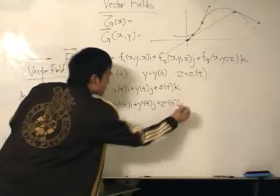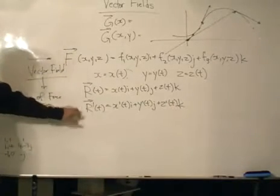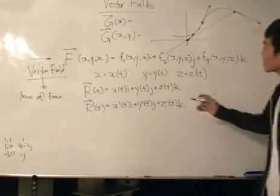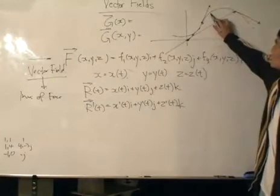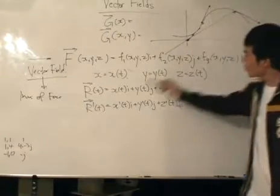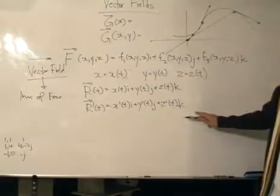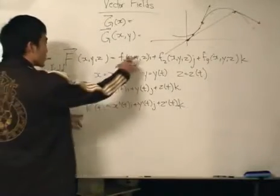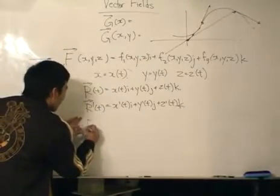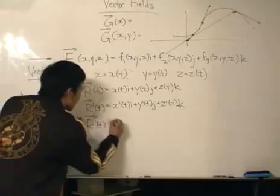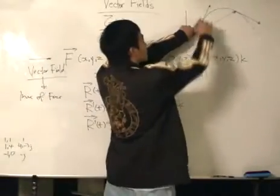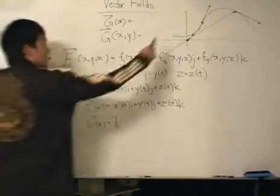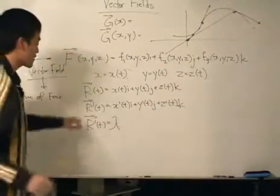How do we relate the vector field to the first derivative of the position vector? We know that the vector field in the context of streamlines or lines of force gives us a vector that is tangential to the curve, meaning that vector would be a constant multiple of this. The vector from the vector field goes in the same direction as the tangential vector.